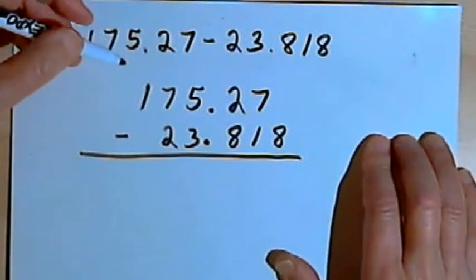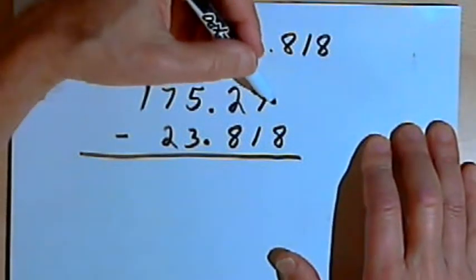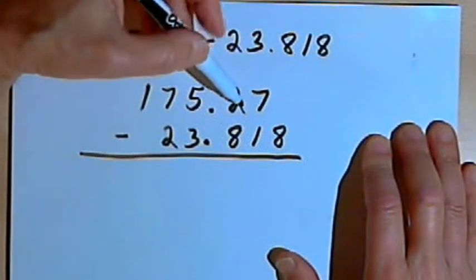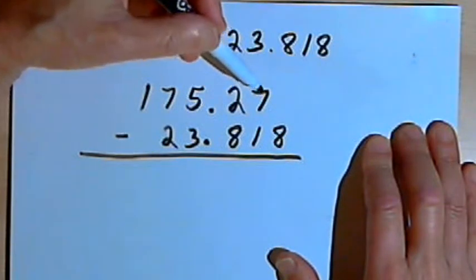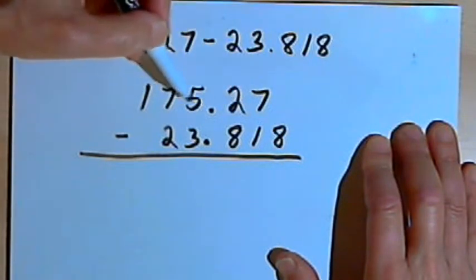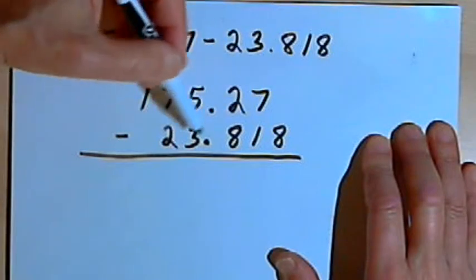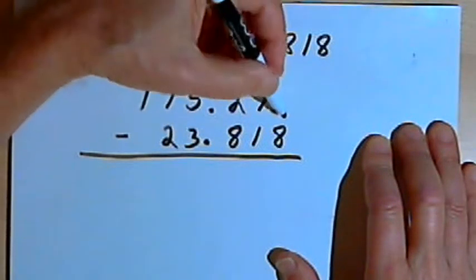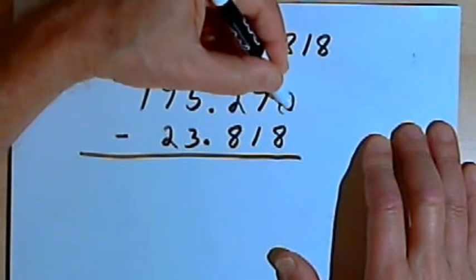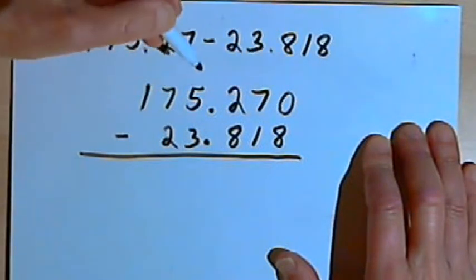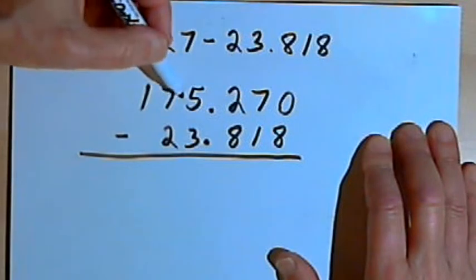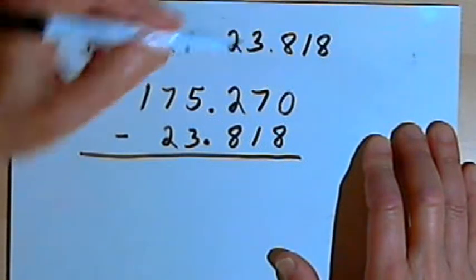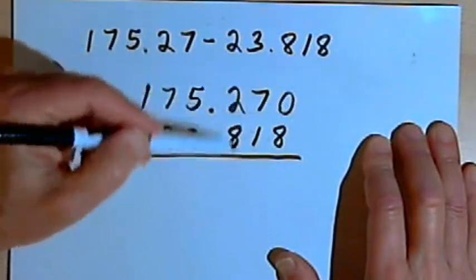Now, looking at this, it seems fairly straightforward except for the fact that I've only got two decimal places in the 175.27 and three decimal places in the other number, 23.818. So I'm going to add a zero, another decimal place, to the first number and make that 175.270. That way the numbers are going to line up more nicely.